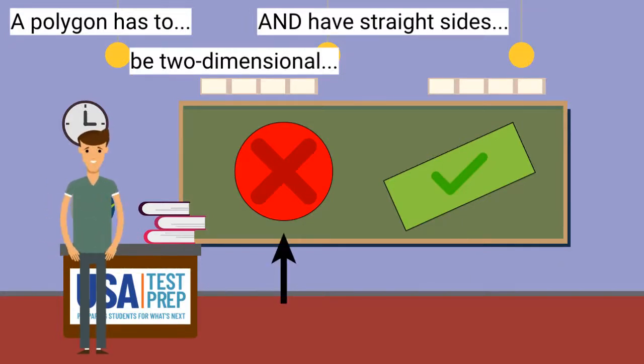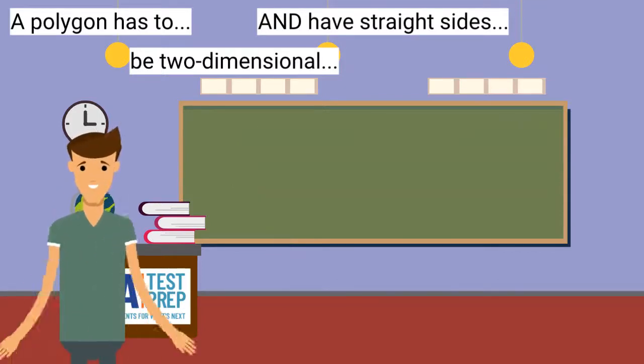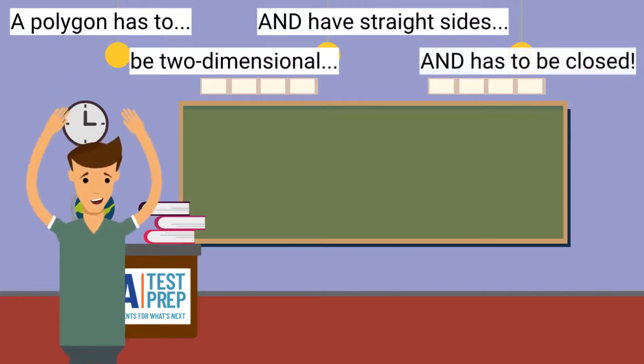The other shape is a circle. A circle is not a polygon because it has curved sides. Finally, a polygon has to be closed.